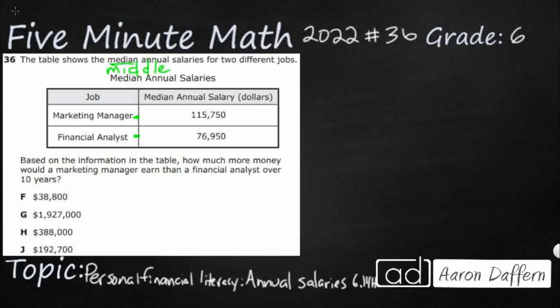There are really two ways we can do this. One way: we can go ahead and multiply both salaries by 10, then subtract the two. If we know our strategies for multiplying by 10, we know we're just adding a zero. So 115,750 multiplied by 10 gives us 1,157,500. And 76,950 multiplied by 10 gives us 769,500. Then we subtract the two.